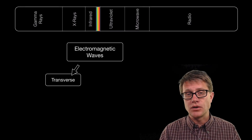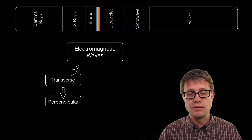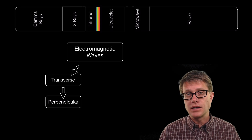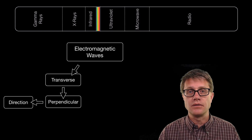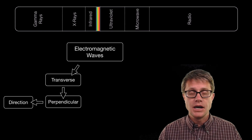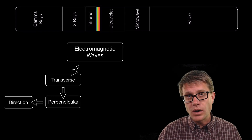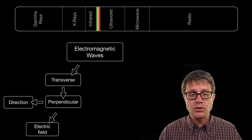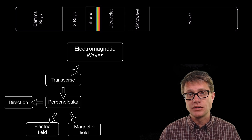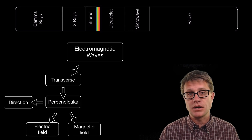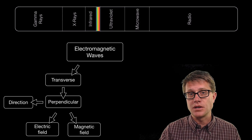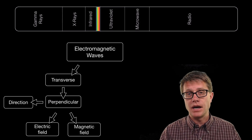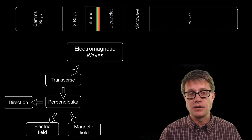Those are transverse waves. A transverse wave is one where the oscillations are perpendicular, or at 90 degrees, to the direction of the movement of the wave. And it is not only in one dimension — we also have electric fields and magnetic fields that are perpendicular to themselves.